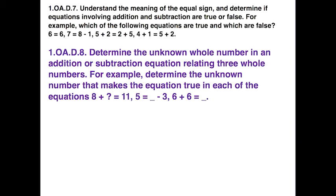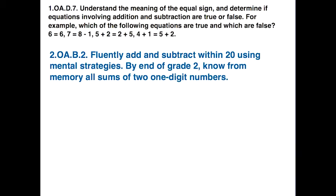Also in first grade, there's standard 1.OA.D8, which states: determine the unknown number in an addition or subtraction equation relating three whole numbers. This one is related because it deals with adding and subtracting in equations. At the next grade level, there's standard 2.OA.B2, which is about fluently adding and subtracting within 20 using mental strategies.